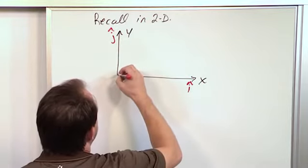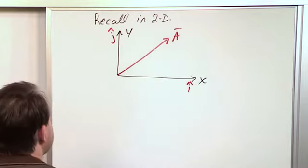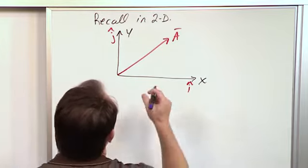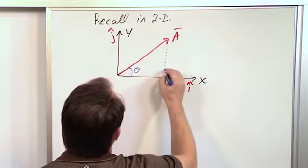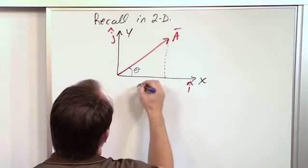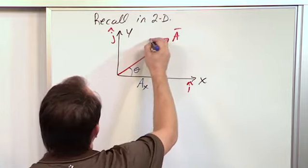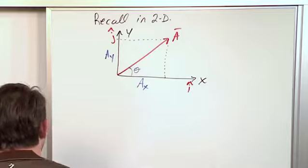And then we said, hey, we can have any arbitrary vector pointed in any arbitrary direction. So we'll call it vector a, like this. And that vector, because it's in an x-y plane like this, and because we know the angle here, we can find the projection of this vector along the x-axis. And we'll call that the component of the vector along x. And we can find the projection of this vector in the y direction. We call that a sub y.